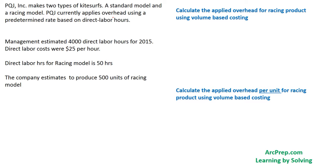Now let's apply this to the racing product. We have the same assumptions: four thousand direct labor hours in total for 2015. The direct labor hours for the racing model is 50 hours, and with that number of direct labor hours the company estimates 500 units of production. We are going to calculate the total overhead applied for the racing product.